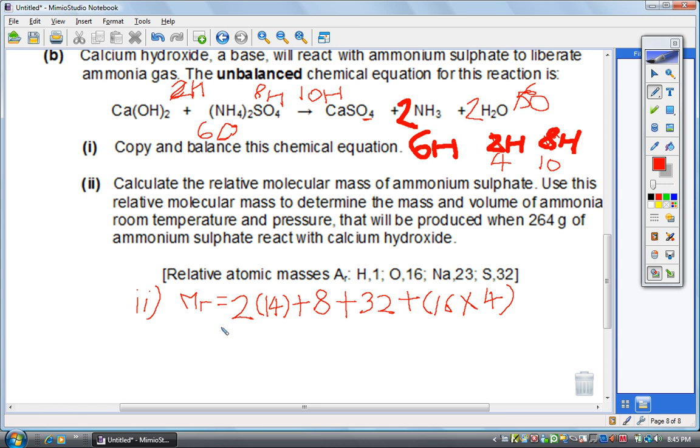If you use your calculator and add up the masses, if you add up 2 times 14 you'll get 28, plus 8 is 36, plus 32 is 68, plus 16 times 4 will give you a value of 132. Next you will determine the mass and volume of ammonia at room temperature and pressure. So first we will find the mass. We need to break down this problem into 3 parts. First is to calculate the MR of ammonium sulfate which is already found.